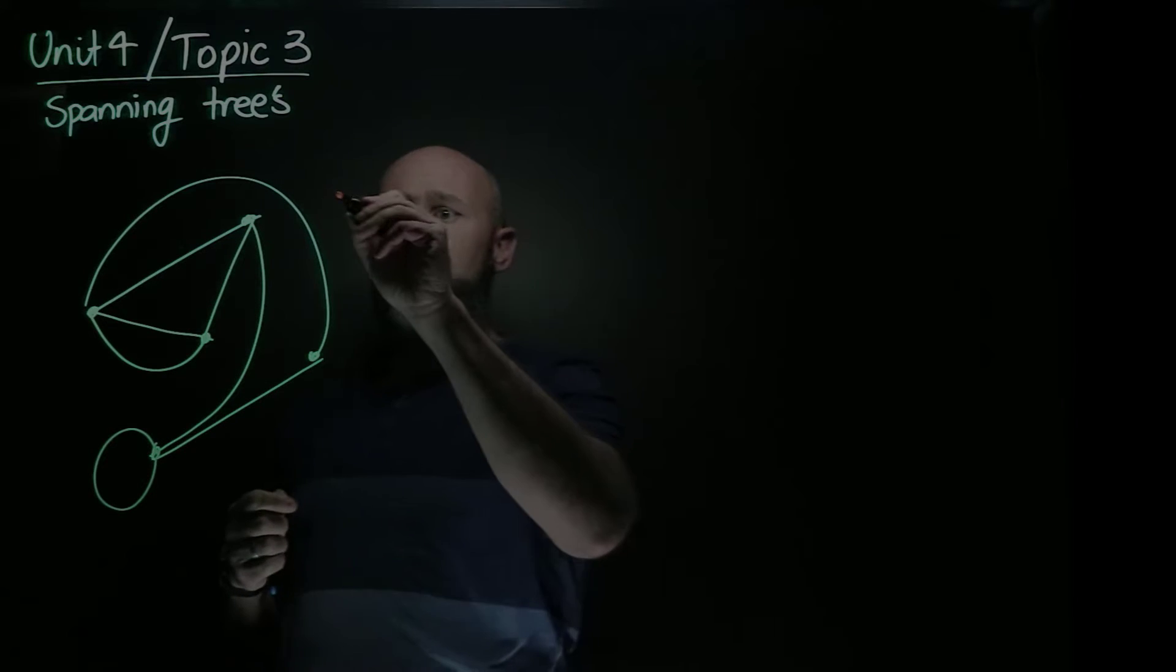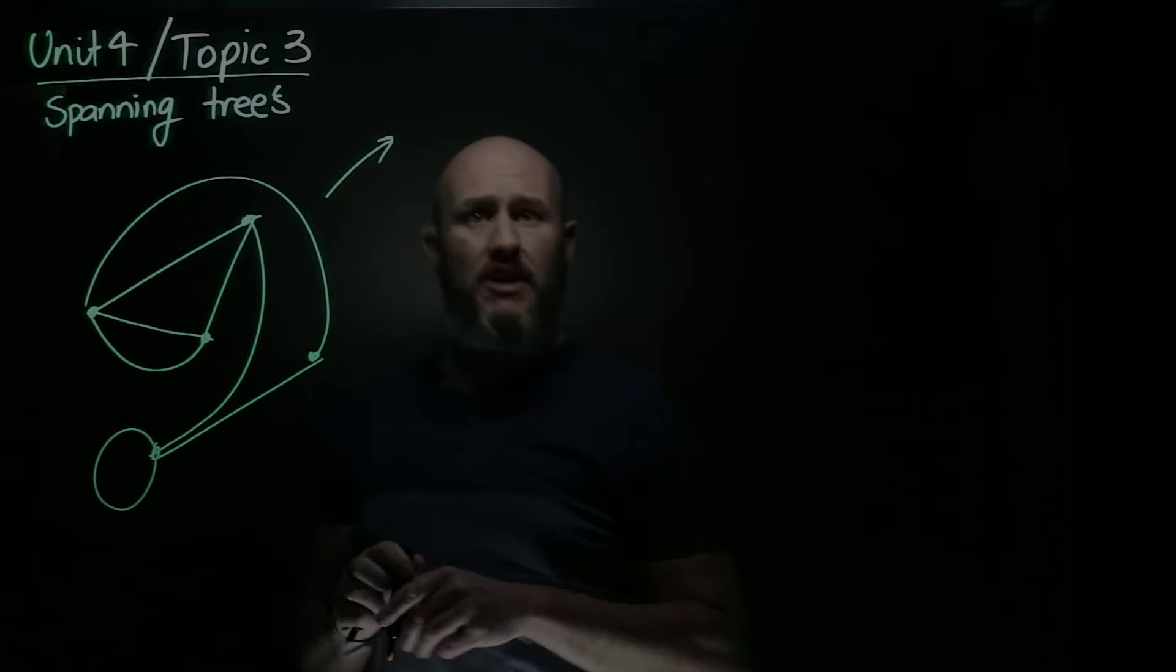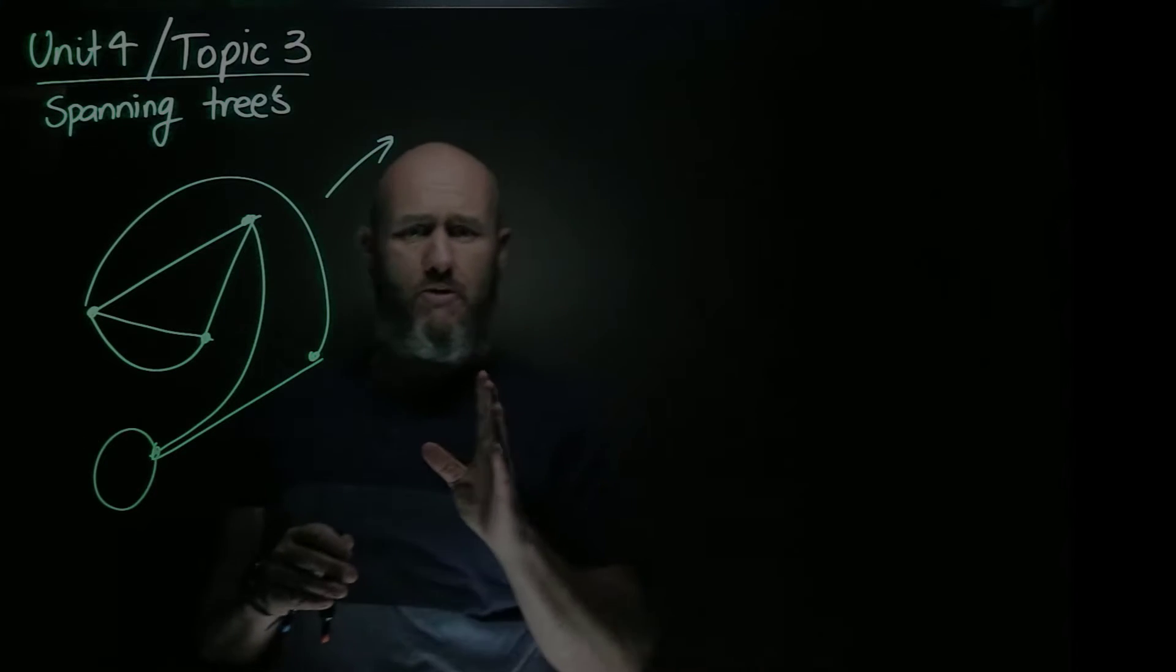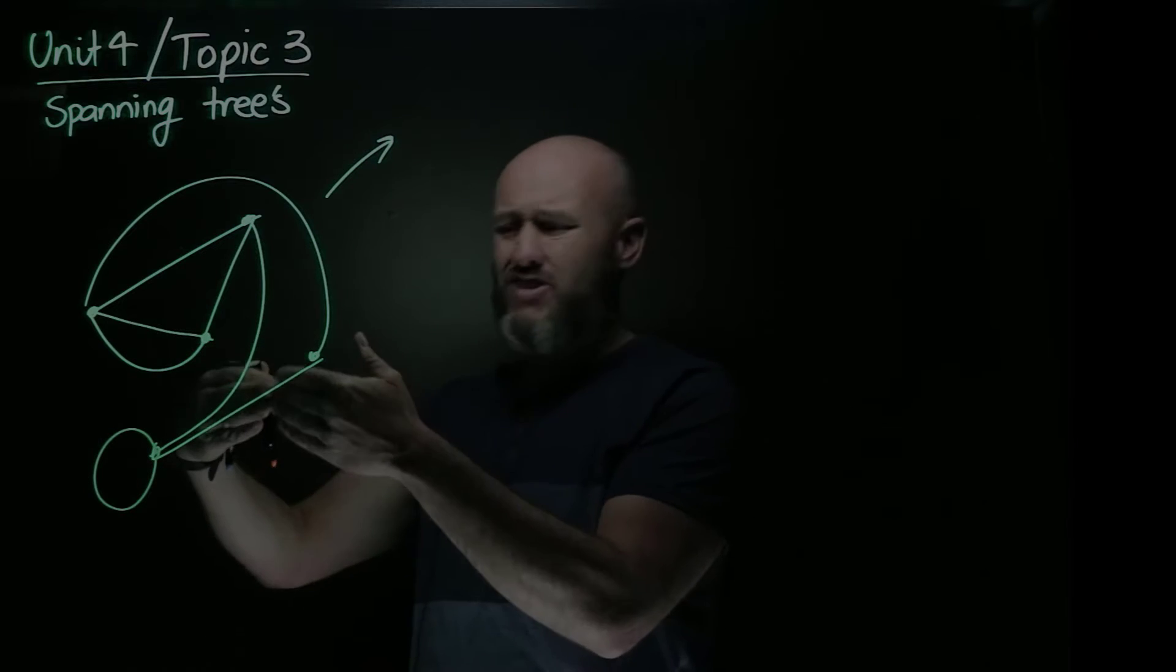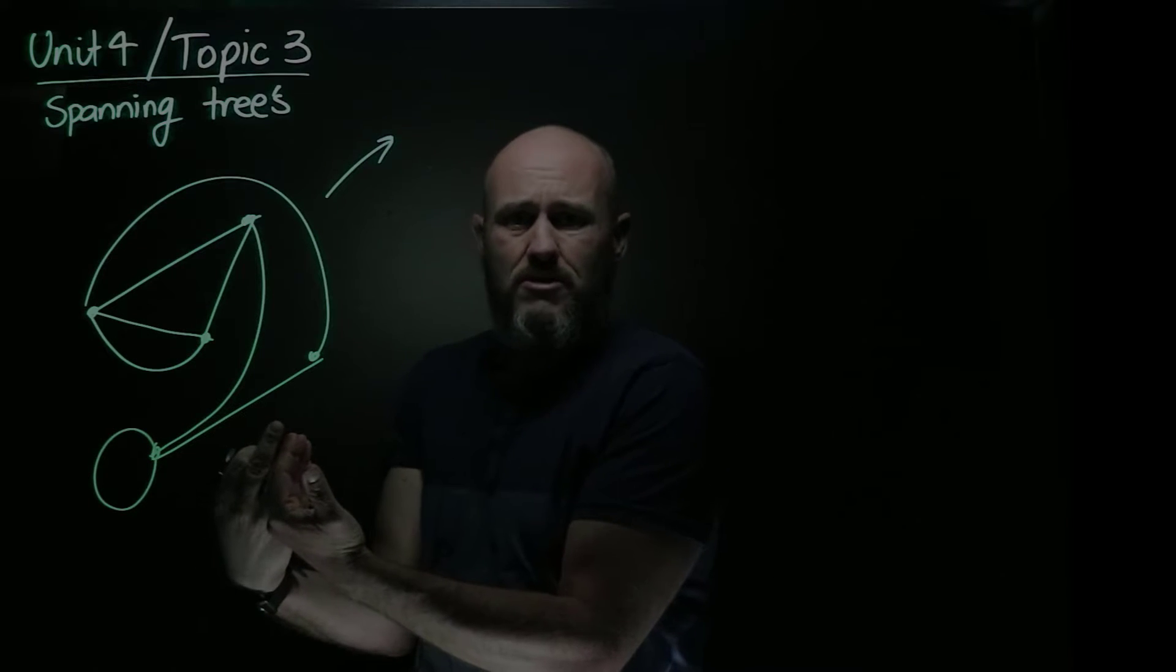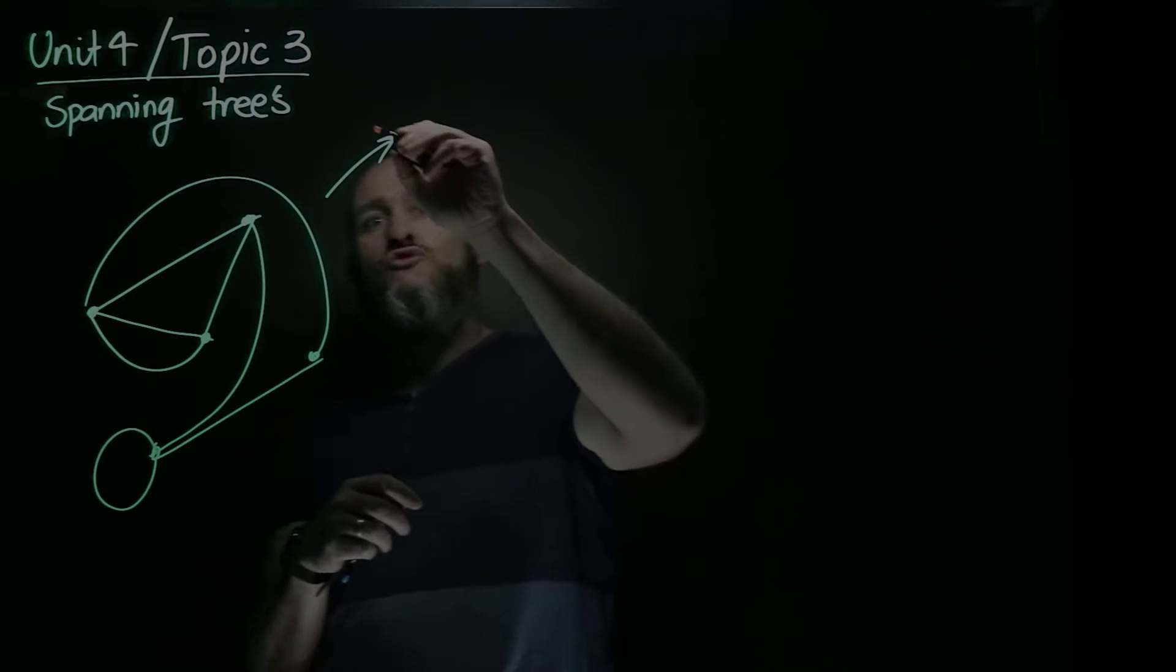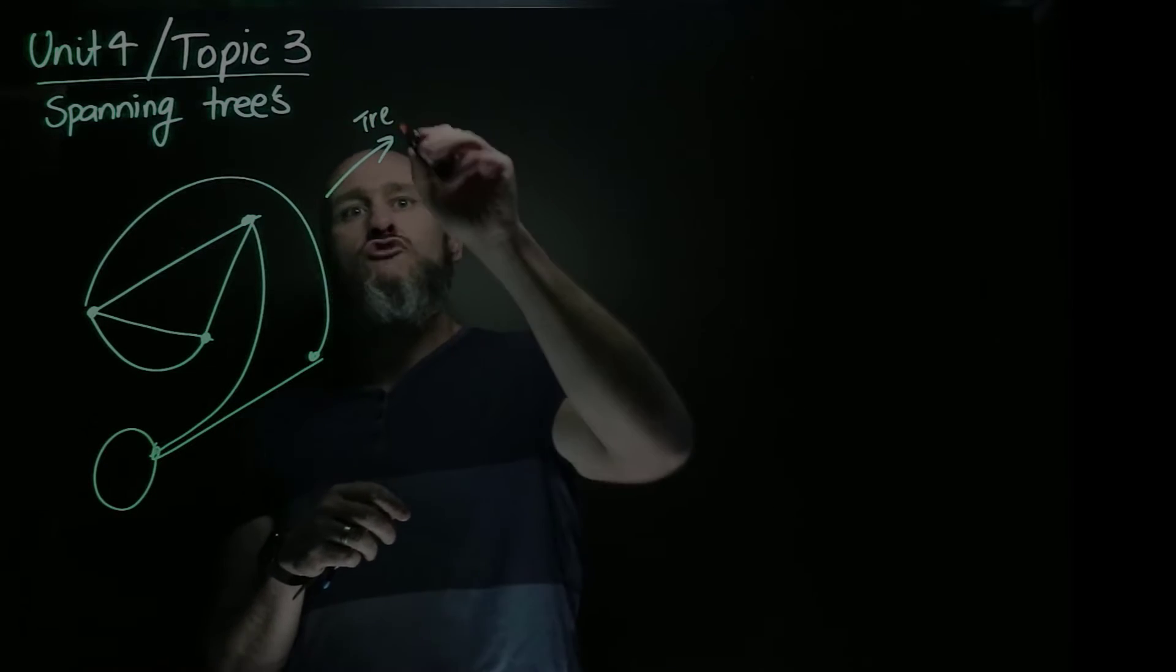A tree, remember, is a graph that doesn't have loops, doesn't have multiple edges, and doesn't have cycles. So it's going to be really important. And of course, if it has a multiple edge, that obviously leads to a cycle. So to not have cycles means it can't have multiple edges. But for it to be a tree, we need to remove those things.